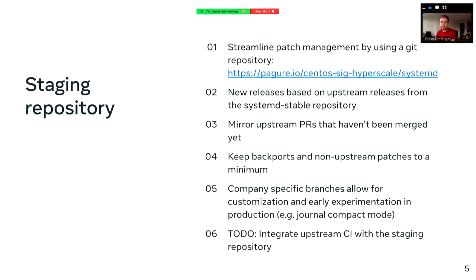Sometimes we take in-progress pull requests that haven't been merged yet, and we merge them into a company-specific branch in the staging repository. This is generally to allow experimentation with the pull request internally in our own fleet to validate the changes, especially when there are larger changes with backwards compatibility concerns. We want to make sure the patch actually works and does what we expect it to, even at large scale, before it gets merged into systemd and becomes available in a public release. The company-specific branches allow us to get that code into our fleet without making it available for every one of Hyperscale's users.